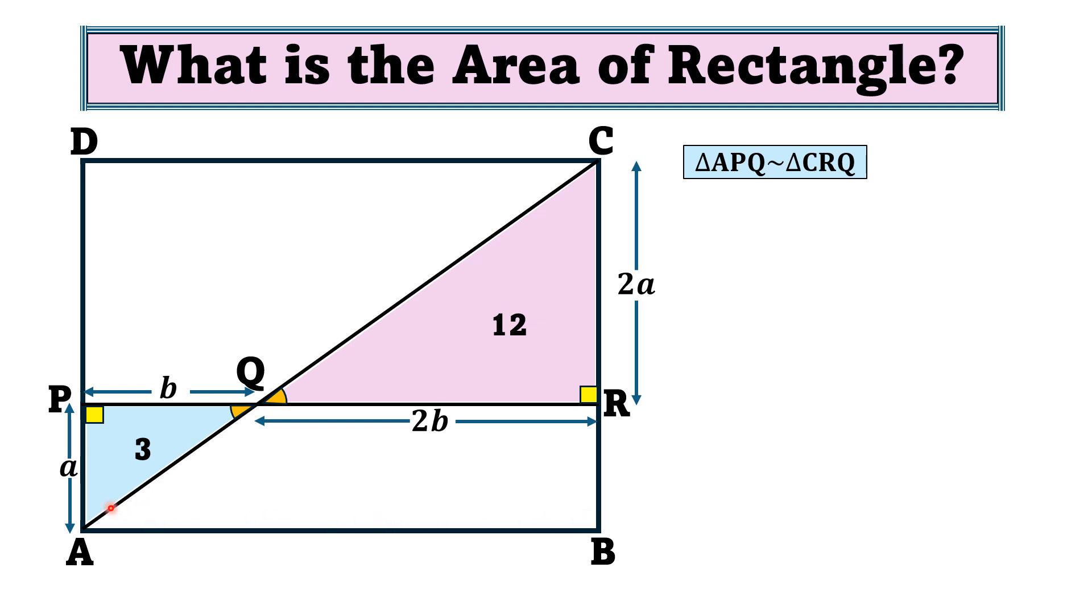Now we find the area of triangle APQ. The area of this triangle is 1/2 times a multiplied by b. And it is given that the area of this triangle is 3 square units.